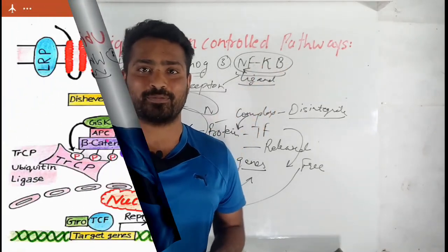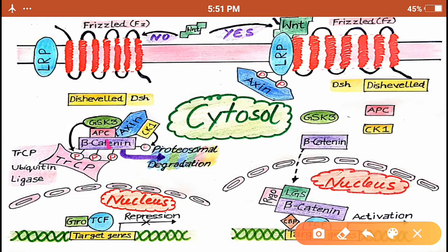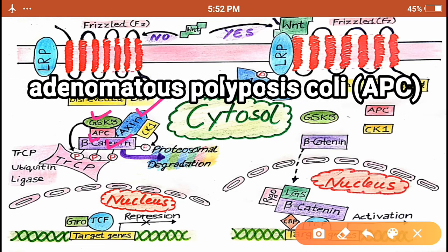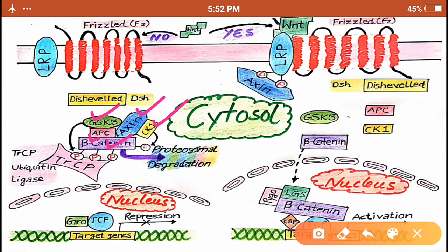Now let's discuss the mechanism. So the central player in this pathway is beta-catenin. Initially, when the ligand is not bound to the receptor, this beta-catenin is bound to a complex formed by scaffolding protein known as auxin. This complex contains other proteins like APC in red color and enzymes like GSK3 which is the glycogen synthase kinase 3 and CK1 or cesin kinase 1. Now what is the function of these enzymes? These enzymes, they phosphorylate the beta-catenin.